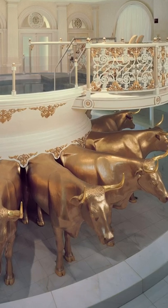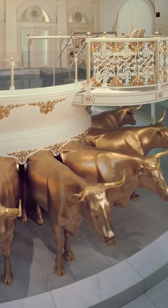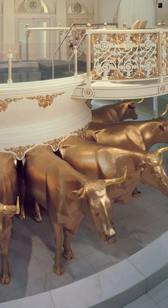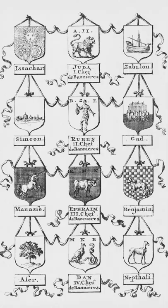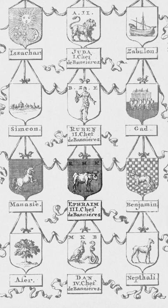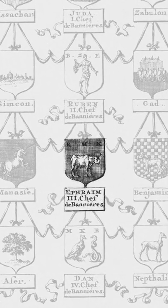Did you know the baptismal font in Mormon temples is traditionally supported by 12 oxen? The oxen are said to represent the 12 tribes of Israel, which correspond with the 12 signs of the zodiac. The tribe of Ephraim, as an example, is symbolic of Taurus and is most often represented as an ox or bull.